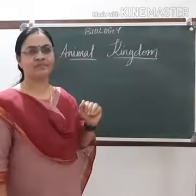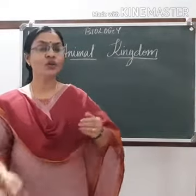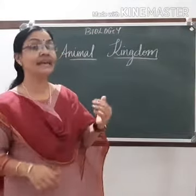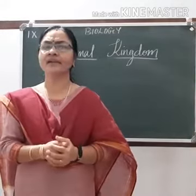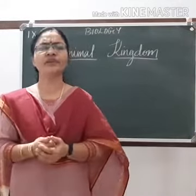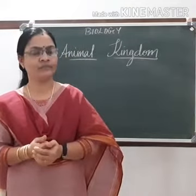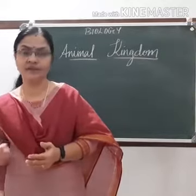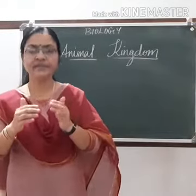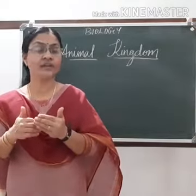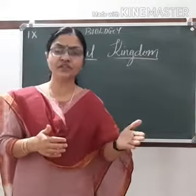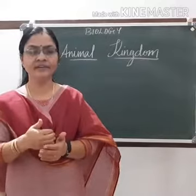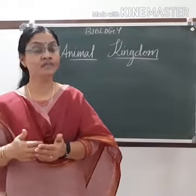Next is the animal kingdom. In the five kingdom system, all organisms which did not have a cell wall were put into a separate group called Animalia. But all animals in Animalia are not the same — there are a lot of differences between them. According to their similarities and differences, they are grouped differently. Under the animal kingdom, the next grouping is called a phylum (whereas for plants it is called a division).